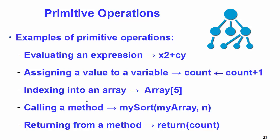The next primitive operation is indexing into an array. If you want to access some element from an array, that is considered a basic operation. For example, if an array contains 10 elements and you want to access the element at index 5 — since index starts from 0 — you access it directly, and that is also called a primitive operation.